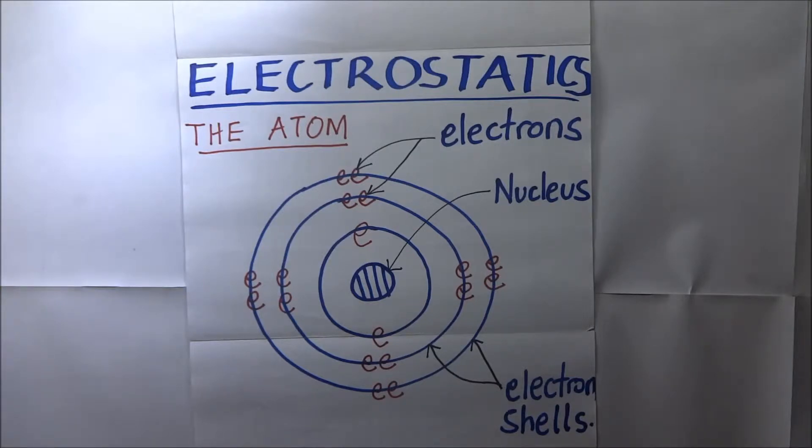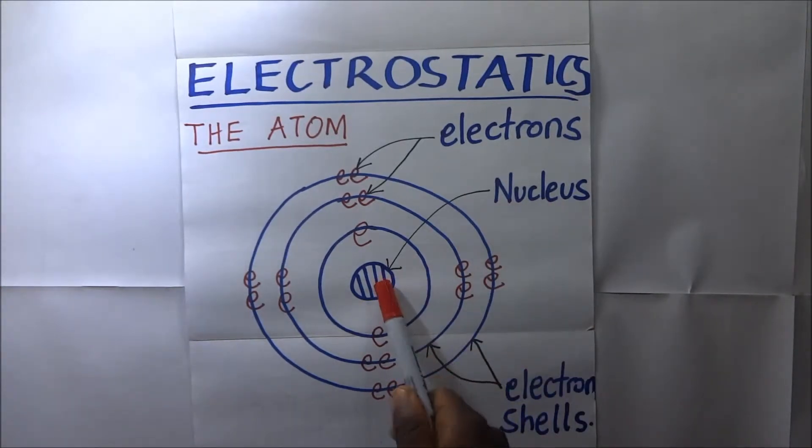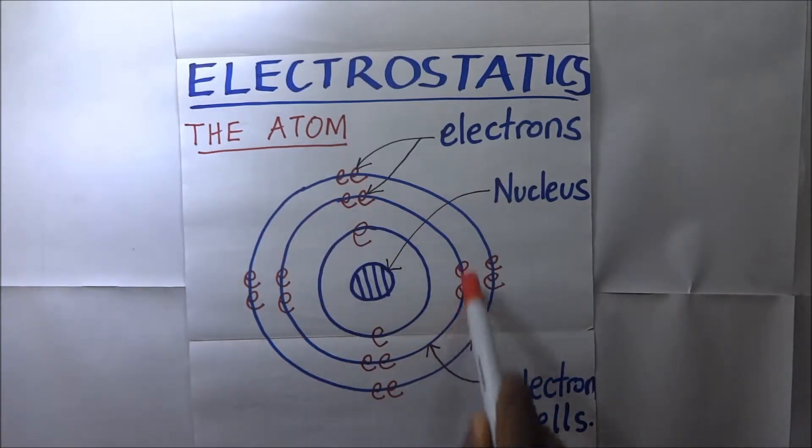Here we shall explore a few aspects about the atom. Thanks for tuning in, it's Kisembo Akademi. So looking at this diagram, we have the nucleus, we have the electrons, and these electrons are positioned on electron shells.